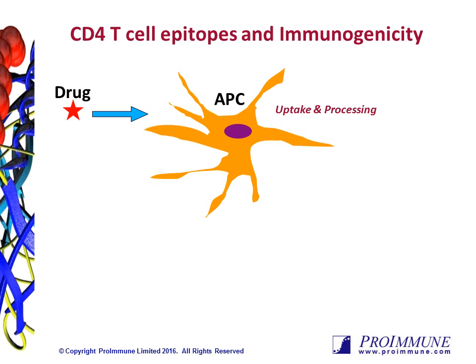Immunogenicity, or unwanted immune responses, can be a significant obstacle in the development of biological drugs. There are multiple factors that contribute to immunogenicity, and these can be described as either extrinsic or intrinsic factors. Extrinsic factors include things like the route of administration, the frequency of exposure to the drug, and the immune status of the patient receiving it, while intrinsic factors represent the biologic itself — the amino acid sequence, the formulation, or whether the biologic will aggregate.